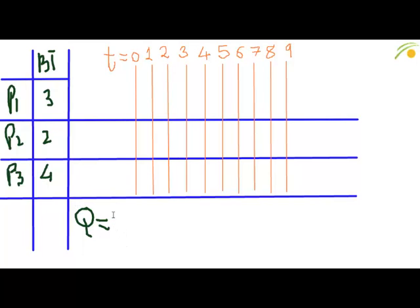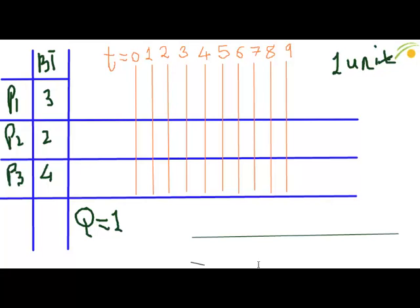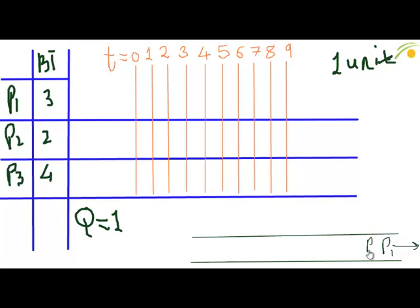Here, let us assume the quantum is 1. That is, each process will hold the CPU for one unit of time — this is what quantum means. This is our process queue. In this queue, the first process is P1, the second is P2, and the third process is P3.